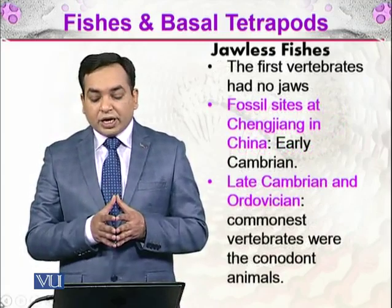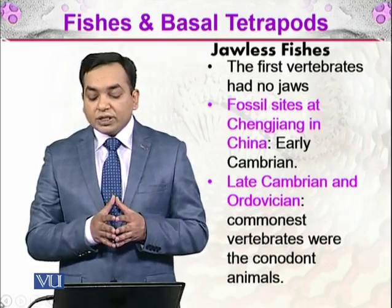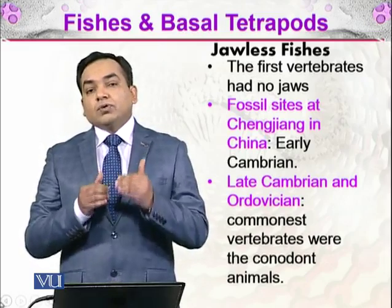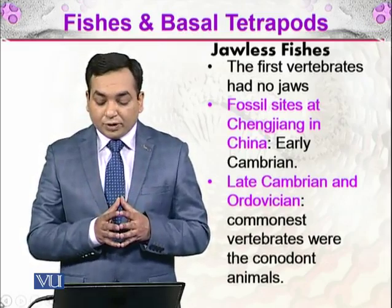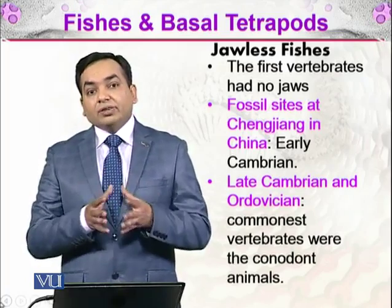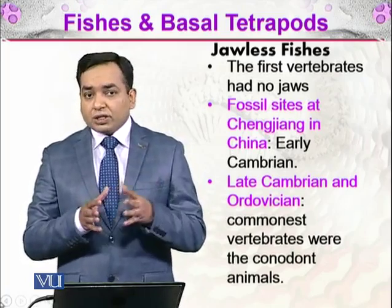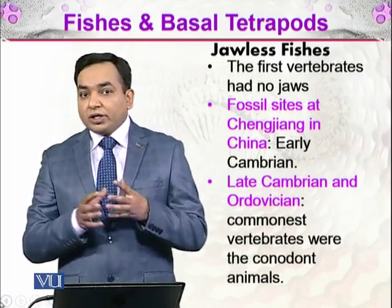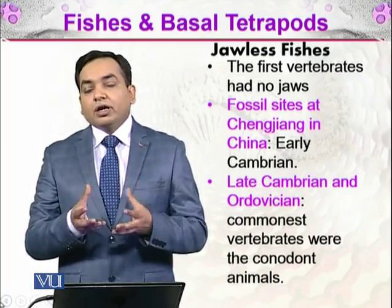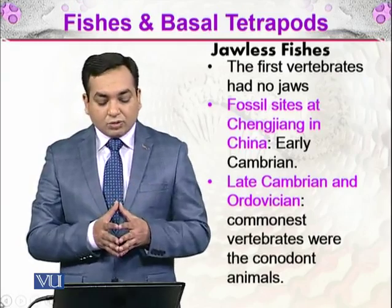The first vertebrates had no jaws. Their fossils are found at Qingjiang in China, and those fossil remains are from the early Cambrian period. Then in the late Cambrian and Ordovician periods, the most common vertebrates were conodont animals. Conodonts had particular cone-like fossil structures that couldn't be identified or explained at first.